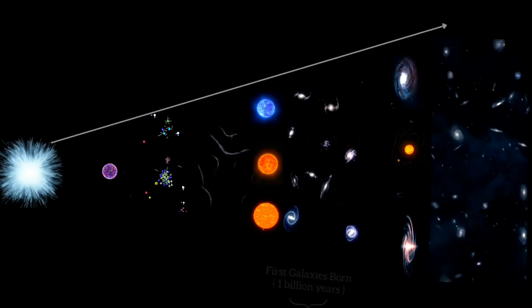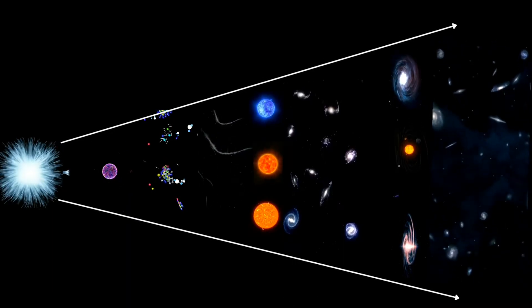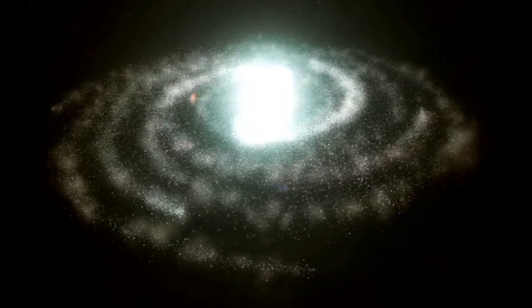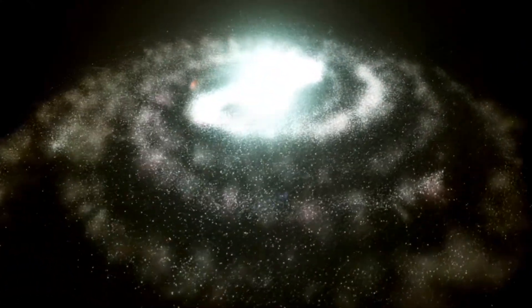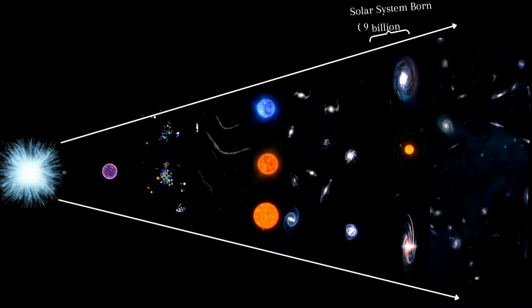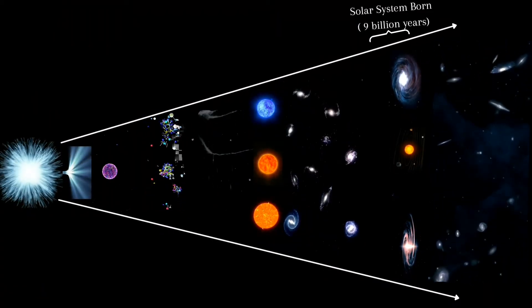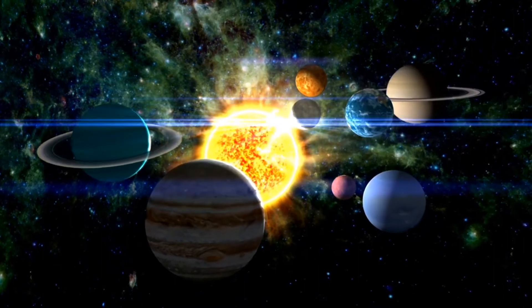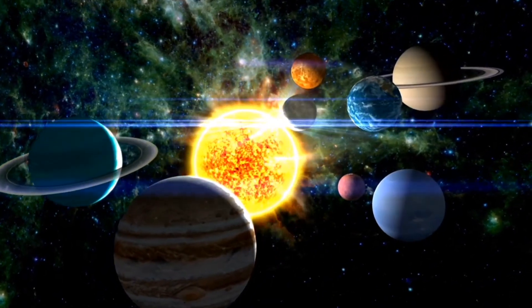Then, within the next 1 billion years, the first galaxies started to take shape like disk structures. Next, the Milky Way was born, and our solar system was born 9 billion years after the Big Bang, which is making it about 4.6 billion years old.